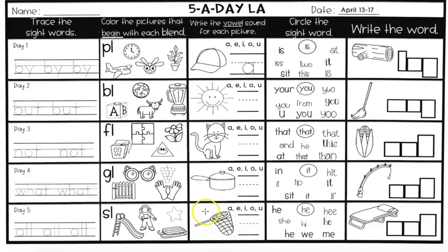Write the vowel sound you hear in the word 'net.' Circle the sight word H-E — 'he.' There are three more sight word 'he' in the box — circle those. The last picture, write what you see: it is a cot — it's a bed that you fold out and sleep on.